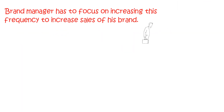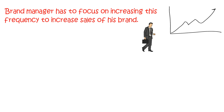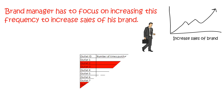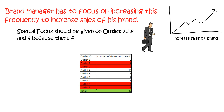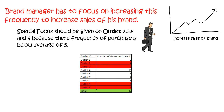The brand manager has to focus on increasing this frequency to increase sales of his brand. Special focus should be given to outlets 2, 3, 8, and 9 because their frequency of purchase is below the average of 5.